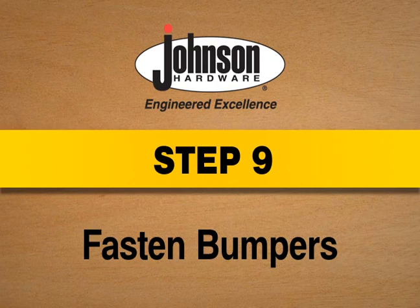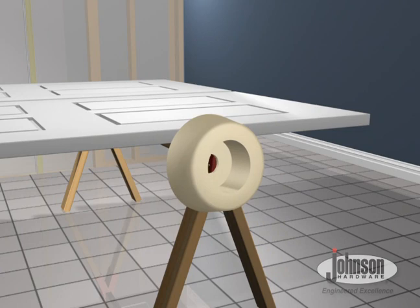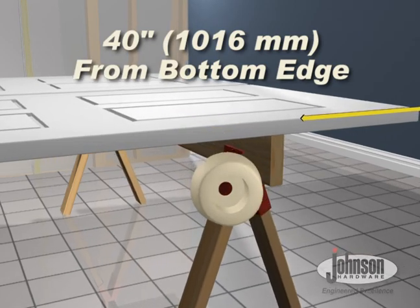Step 9. Fasten bumpers. Fasten 1513 bumper on back edge of each door, 40 inches from bottom edge.